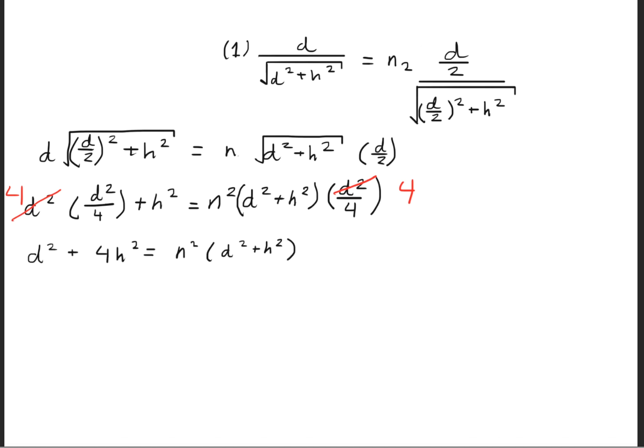This will get rid of the 4 in those denominators right there, leaving us with less fractions to deal with, which gives us d squared plus 4h squared is equal to n squared times d squared plus h squared. What we'll go ahead and do is expand on the right side so that we get this form.